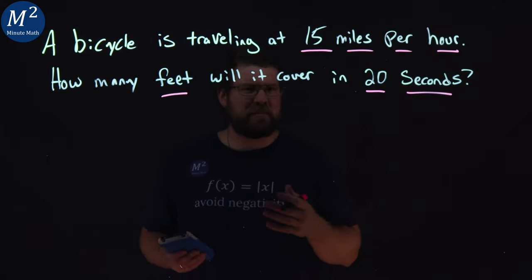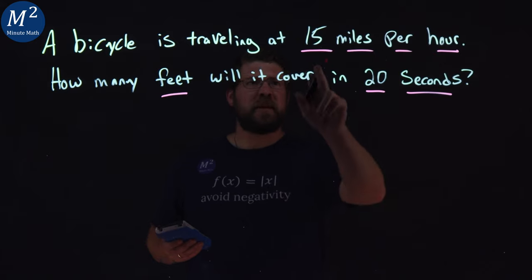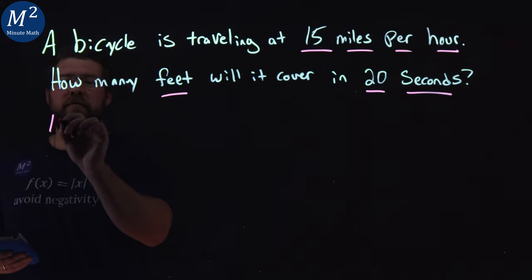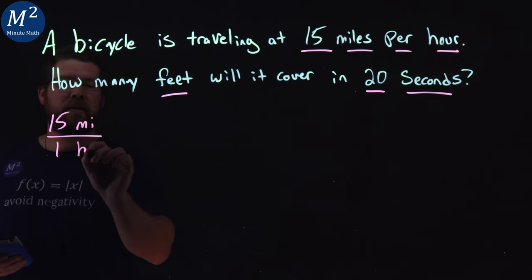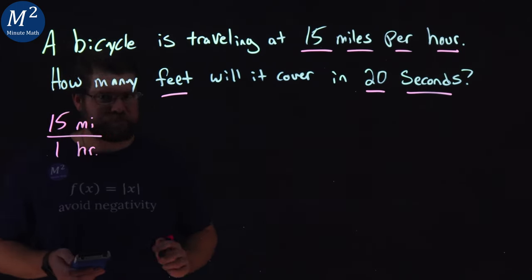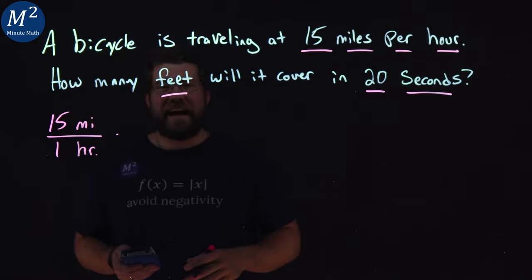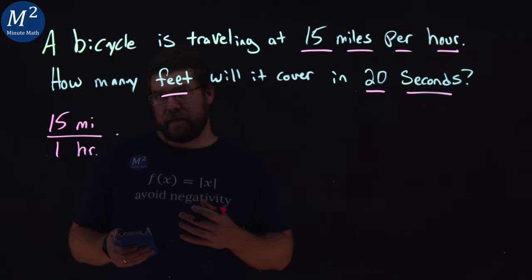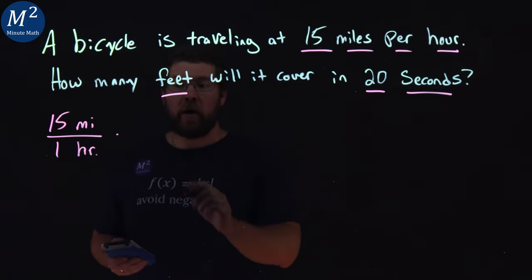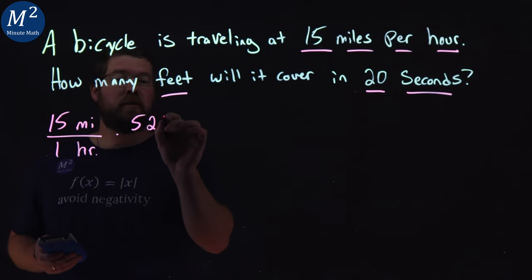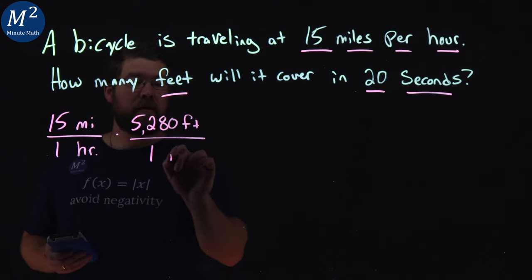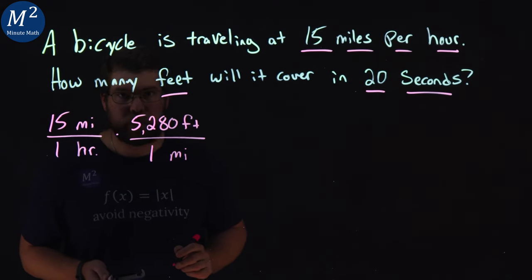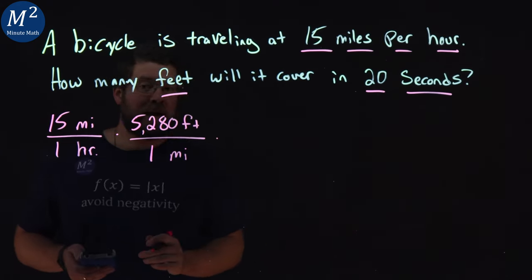So we're going to set up a pretty large fraction here. 15 miles per one hour. So 15 miles per one hour. Well, I want to see how many feet that is. So there are 5,280 feet per one mile.